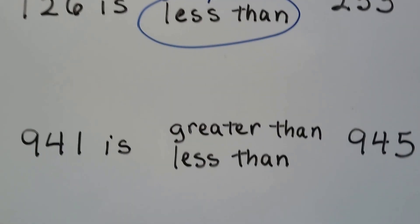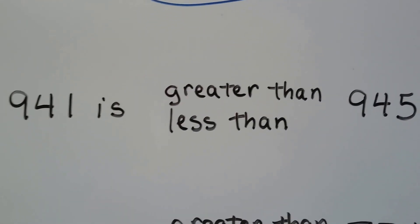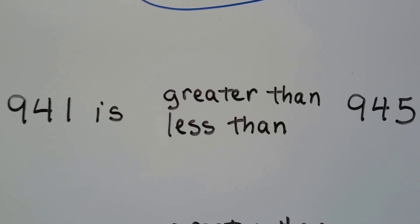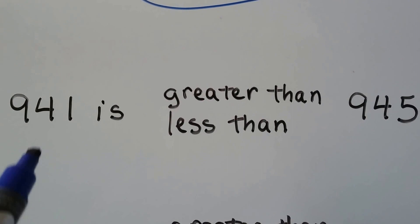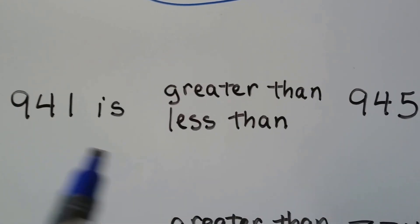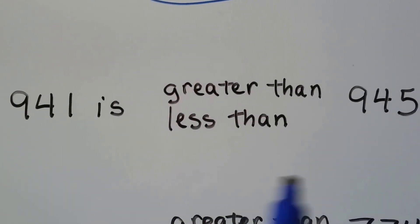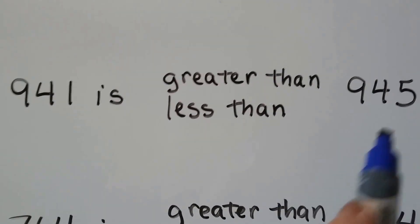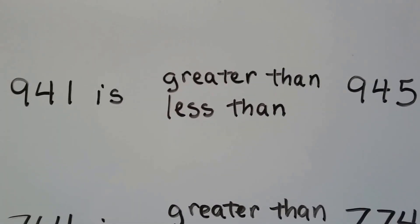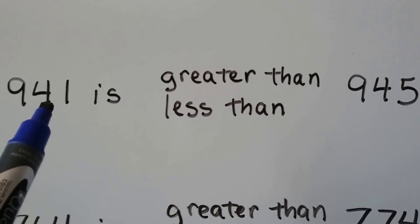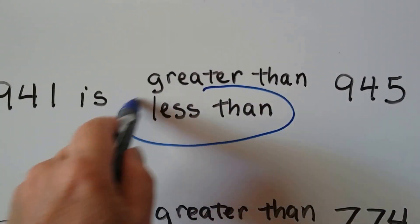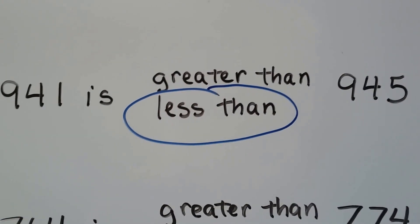Let's try this one. 941 is greater than or less than 945. They've got the same hundreds — a nine. They've got the same tens — a four. So we go to the ones place. That has one one, that has five ones. So 941 is less than 945.